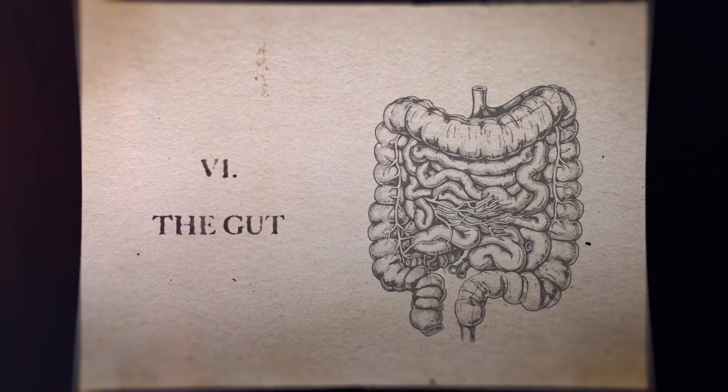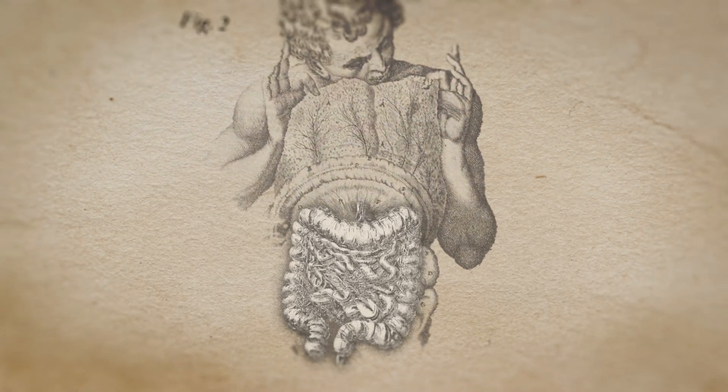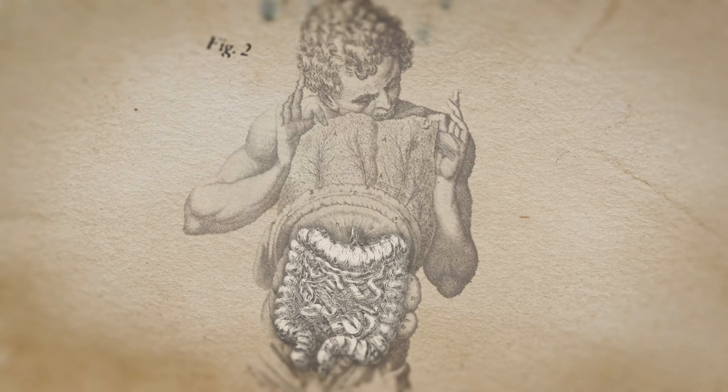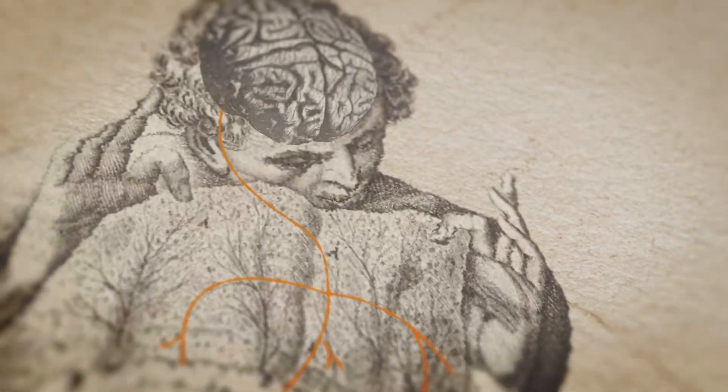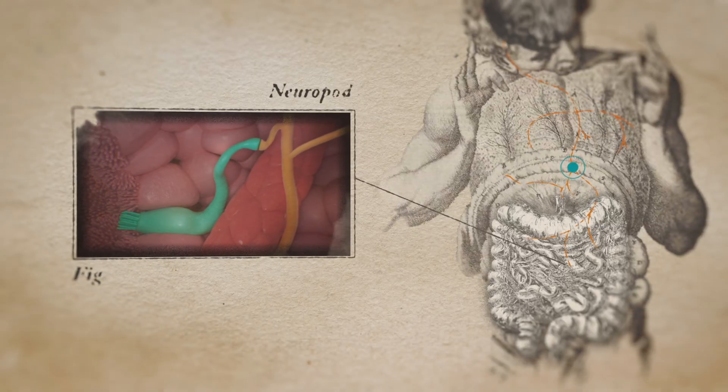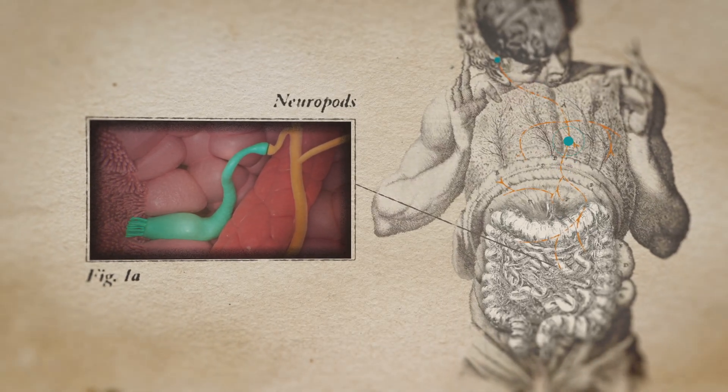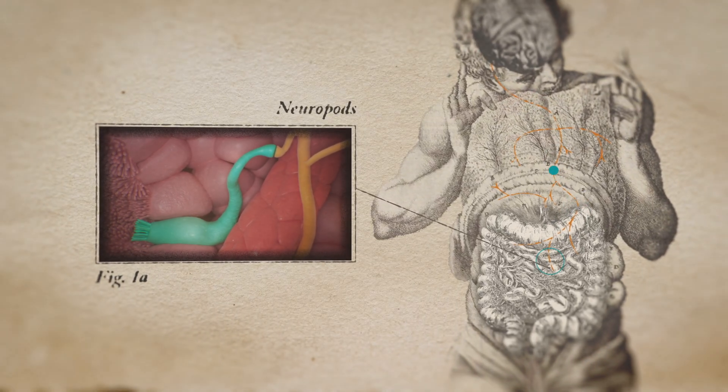This allows us to perceive our internal gut environment, detect nutrients and guide food choices. Signals from nutrients in the gut are transmitted via neuropod cells to the vagus nerve directly to the brain.